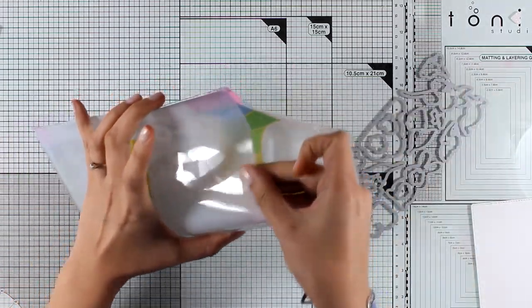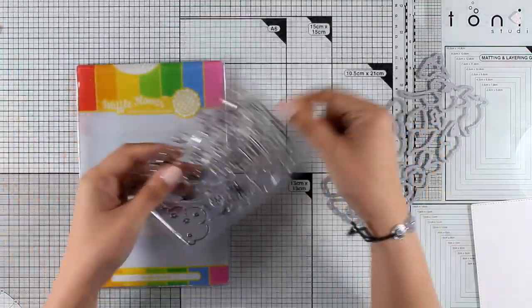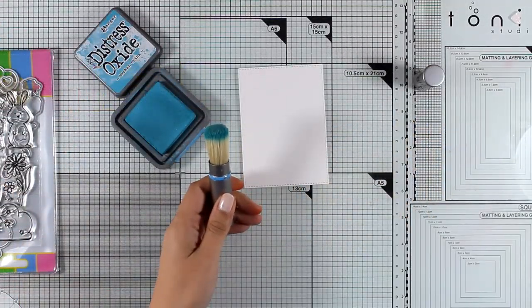The envelope has two pockets so you can store both the stamps and the dies.